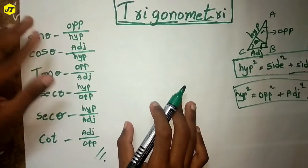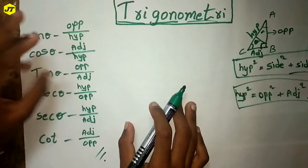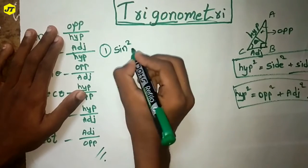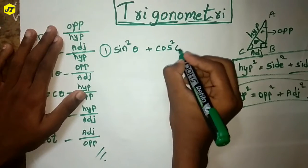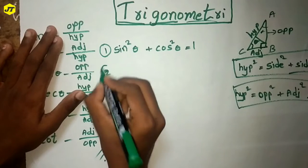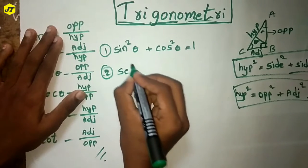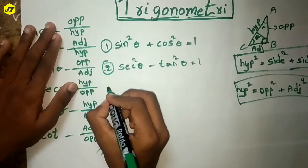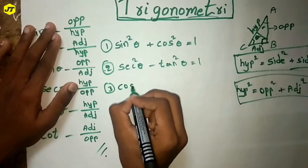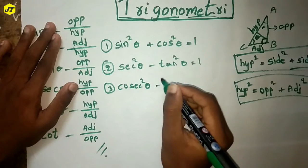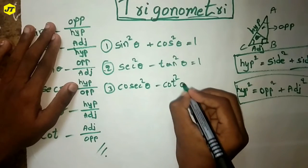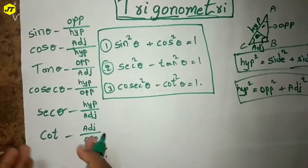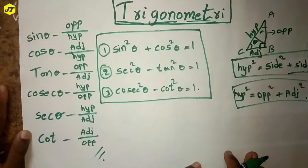There are three more important formulas. First: sine squared theta plus cos squared theta equals 1. Second: secant squared theta minus tan squared theta equals 1. Third: cosecant squared theta minus cot squared theta equals 1. These are very important for 10th class trigonometry.